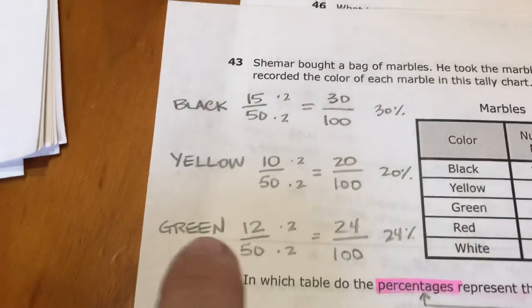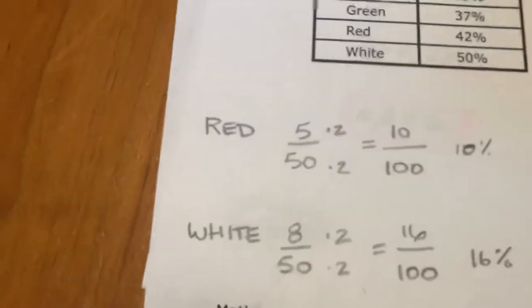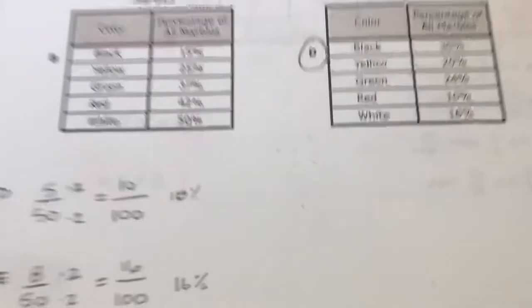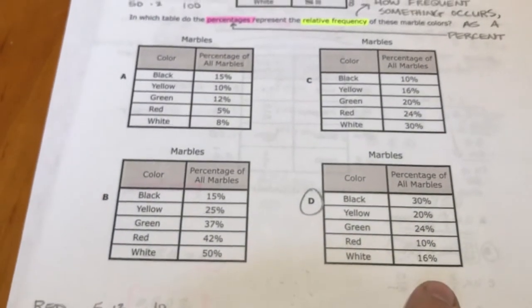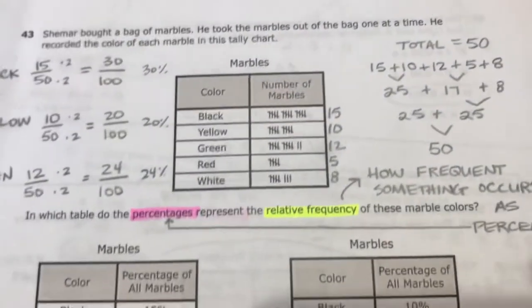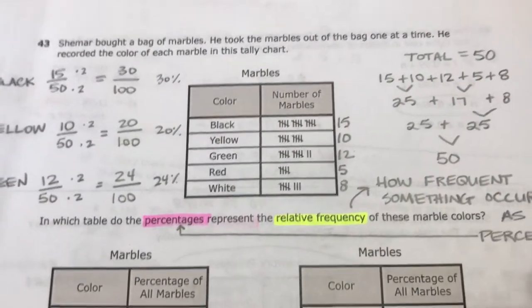So once I did that, black was 30%, yellow was 20%, green was 24%, red was 10%, and white was 16%. So answer choice D is the only one that has those percentages that go with those numbers. So relative frequency is just how often something happens.